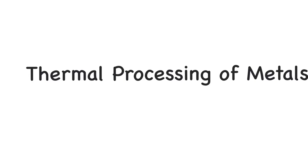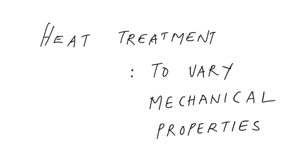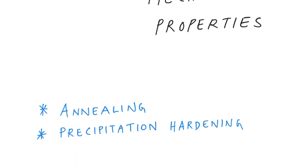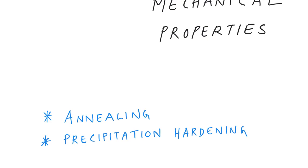Welcome back. In this video, the topic is thermal processing of metals. I've already covered heat treatment and the reasons we perform it. In this segment, I'll discuss in detail the different kinds of heat treatment processes — such as annealing and precipitation hardening — including their advantages and the different types of annealing and how they are classified.